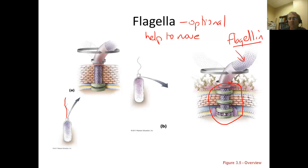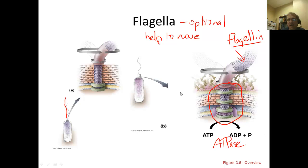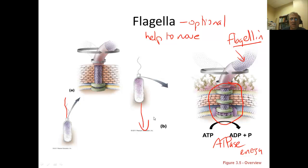Another protein found at the base of the flagella is called ATPase. As you might guess, ATPase hydrolyzes ATP to form ADP and free phosphate. The energy released during this hydrolysis gets translated into energy of motion — the flagella begins to spin around the basal body. This rotational motion enables the microorganism to move through the environment, as the flagella works like a little propeller.